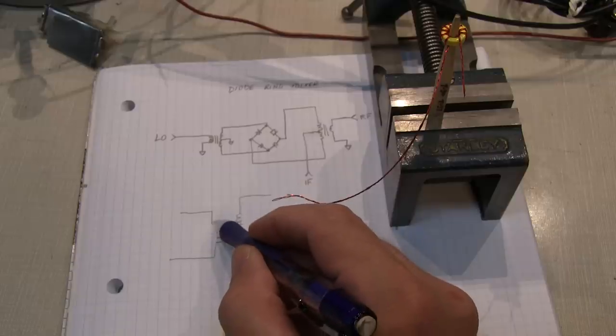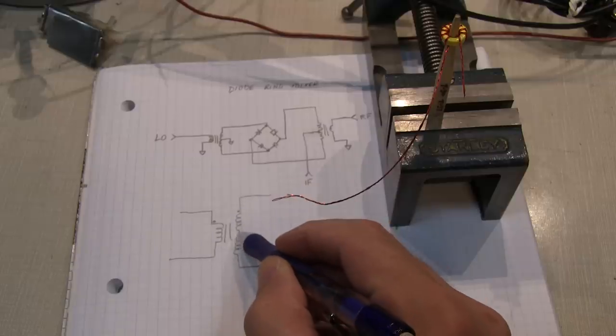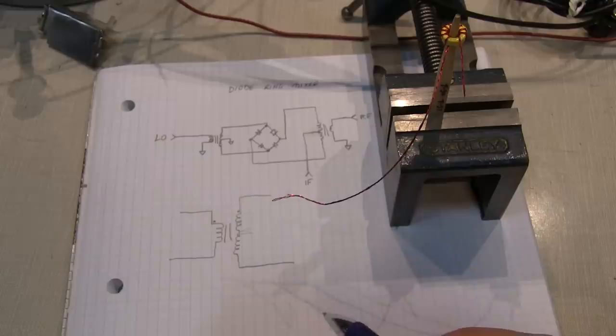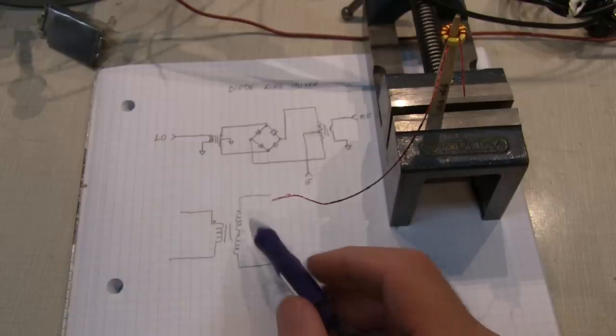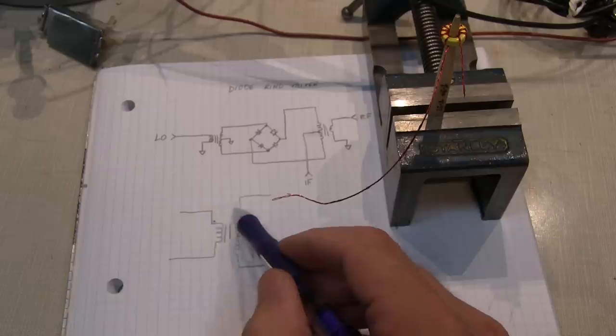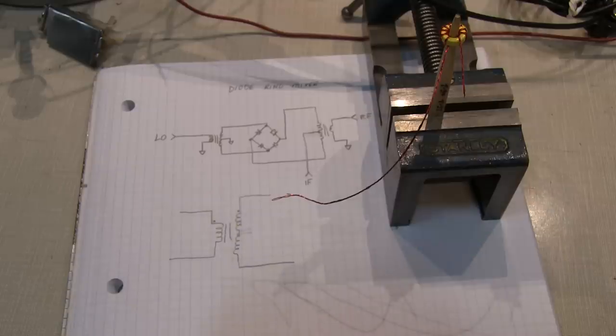So let's kind of put a phasing dot by each of those three. Now, of course, these wires are separate right here. For our use in the mixer here, we're going to tie those together. But we need to identify which wires are which coming off the toroid.